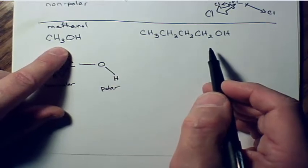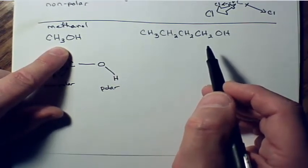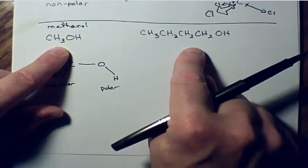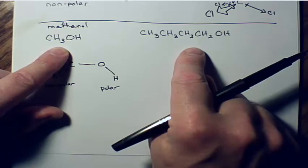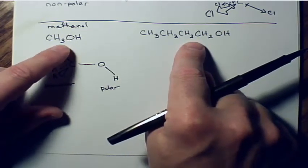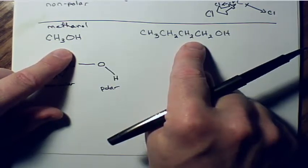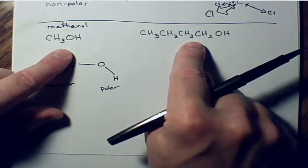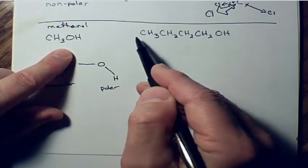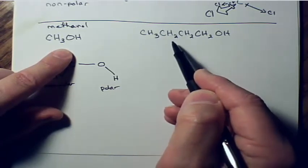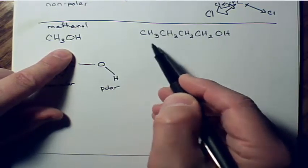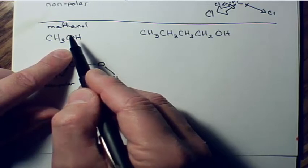Looking at these two molecules, which has the greater polarity overall? The one on the left has a greater polarity. Why? Because there's a bunch of non-polar stuff over there that counteracts the polar end. Since the nonpolar portion is so big and the polar part is just one small group on the end, overall this molecule is less polar than the other one — there's a balance going on.